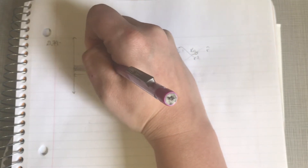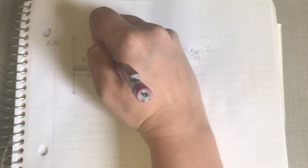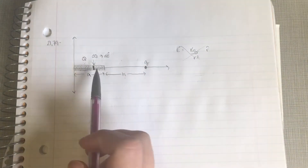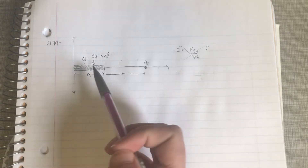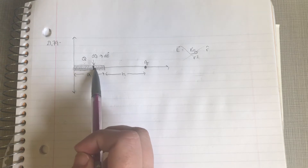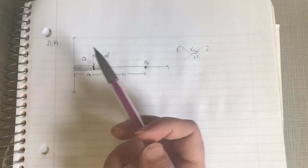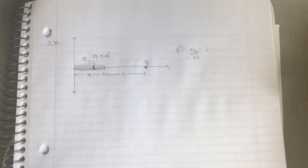Each piece has charge dq, and we can find the electric field that each little piece puts off. Basically what we're doing is taking a little slice, calling it a point charge, and then adding up all the teeny tiny slices to get the total field. This is essentially what you're doing when you use the integral version of Coulomb's law.